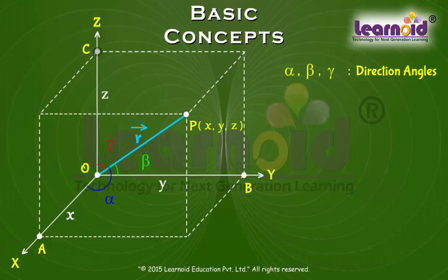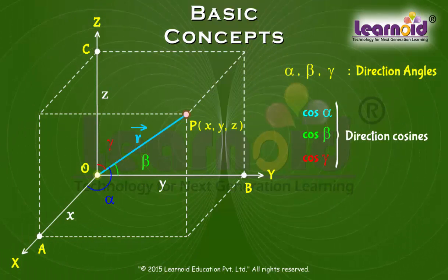The cosine values of these angles cos alpha, cos beta and cos gamma are called direction cosines of the vector R and are denoted by L, M and N respectively.